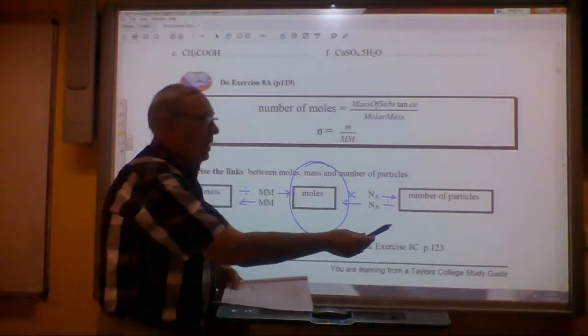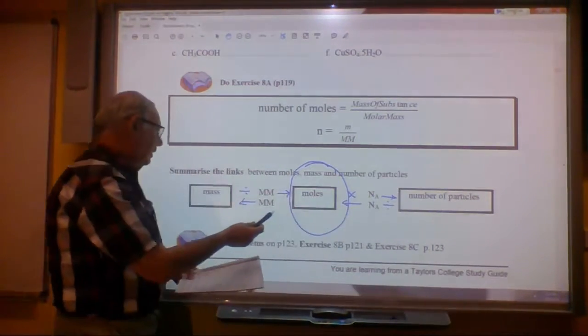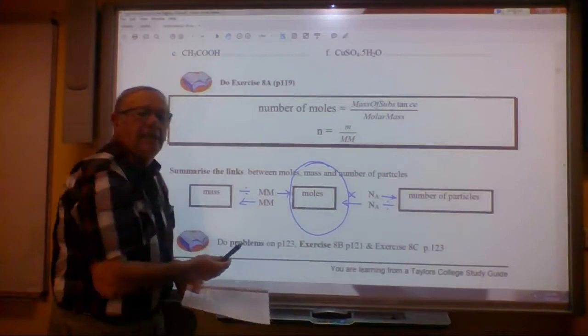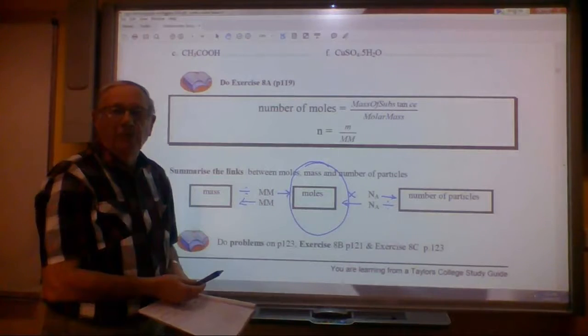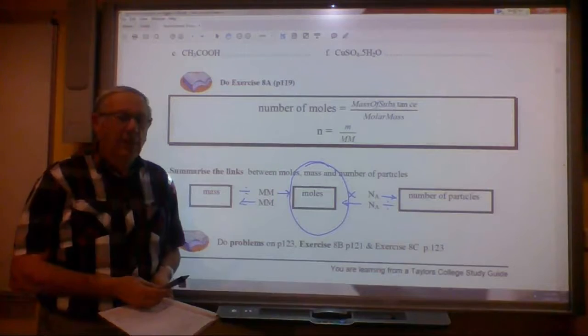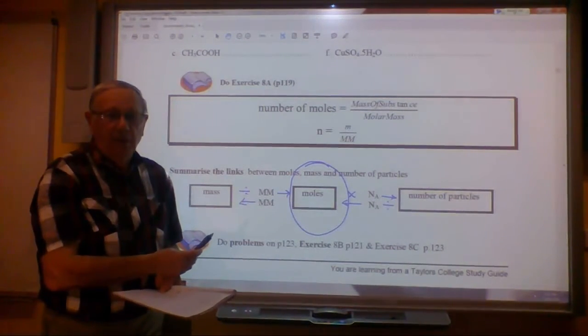We can convert from moles to particles and moles to mass. Very, very difficult, though, to convert the number of particles directly to the mass. First step always is to convert to moles. This is a very handy summary to keep in mind. This is a very important formula to keep in mind.